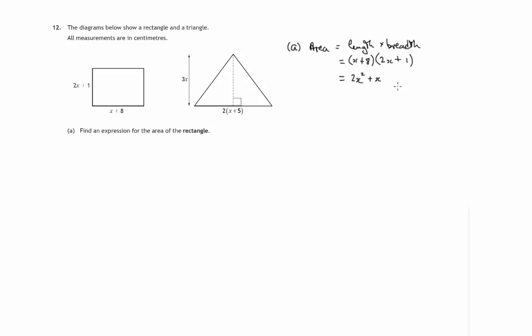Insides: 8 times 2x is 16x. And the last terms in each of the brackets: 8 times 1 is 8. And of course the outsides and insides combine: 2x squared, 1x plus 16x is 17x plus 8.